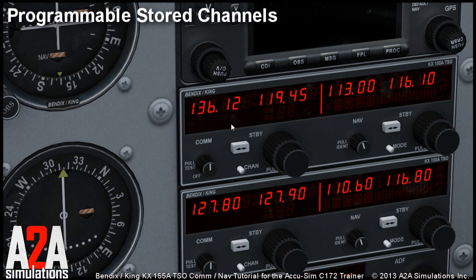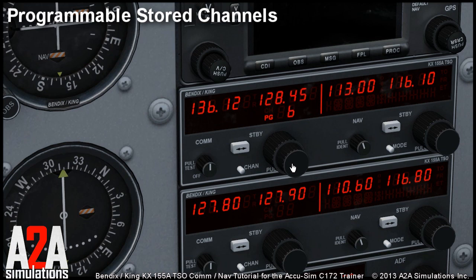To program your own frequencies, press and hold the channel button for a few seconds. The unit enters program mode, identified by the 'PG' text. The channel number starts to flash and you can select the channel you want to program by rotating one of the knobs. You have access to all 32 channels; some of them are not programmed yet, so they show dashes in the upper row.